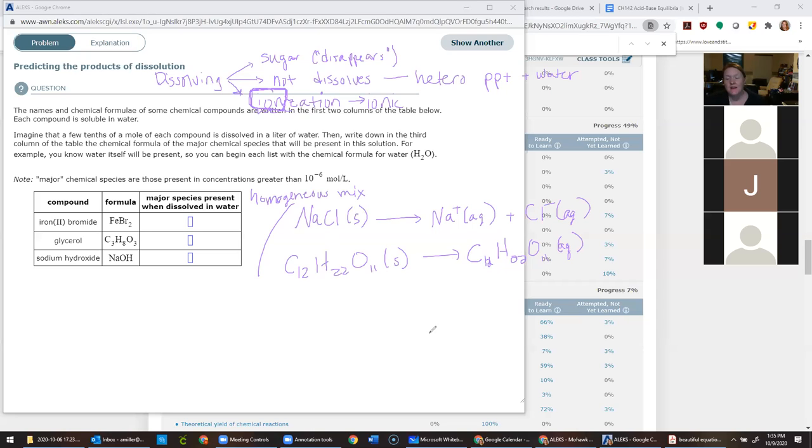So ionic things will do that when they dissolve. Covalent things like sugar don't ionize, they just stay the way they are. But they become aqueous instead of solid. So we're not changing their structures whatsoever, we're just changing the phase essentially. Things that don't dissolve will just stay solid.